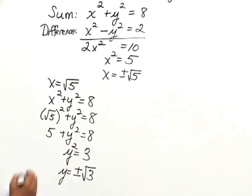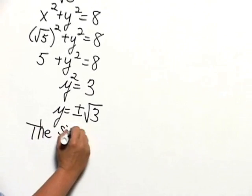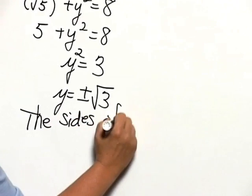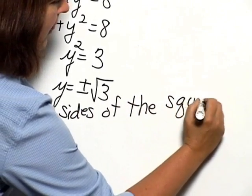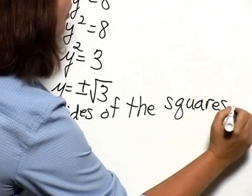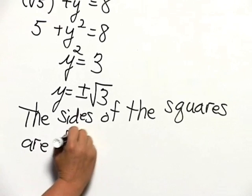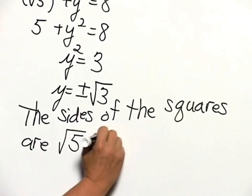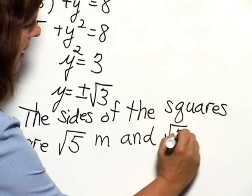So we can state that the sides of the squares are the square root of 5 meters and the square root of 3 meters.